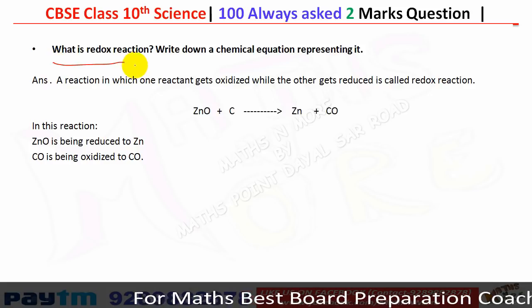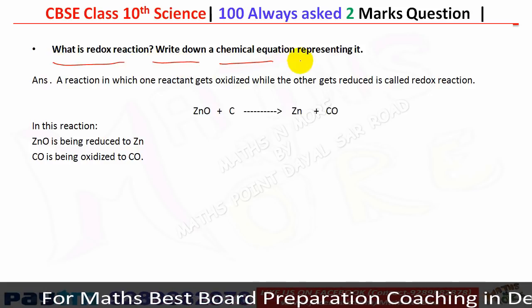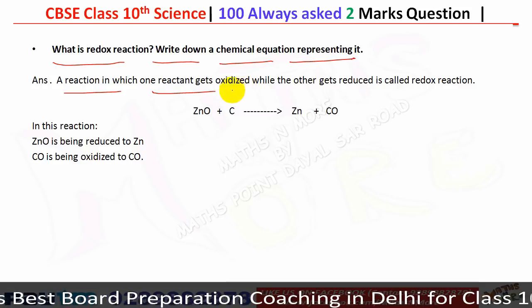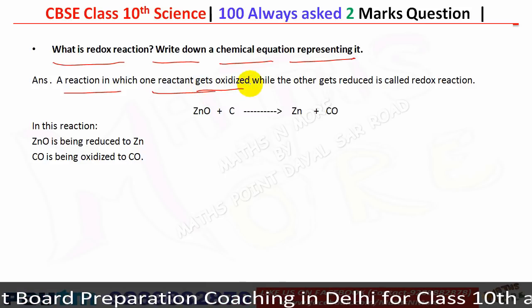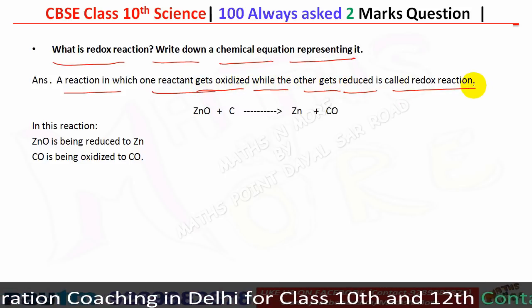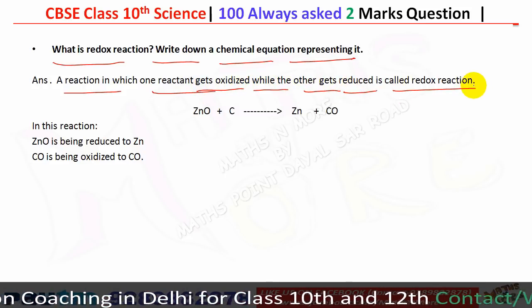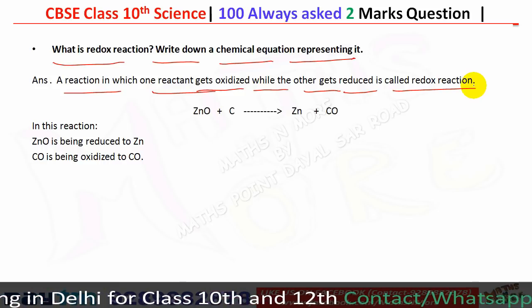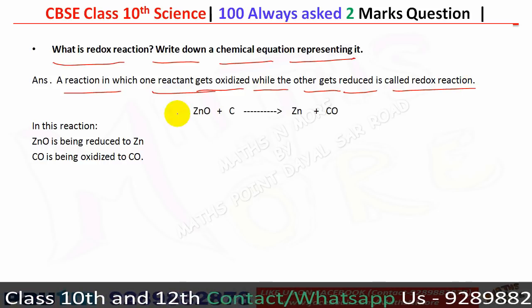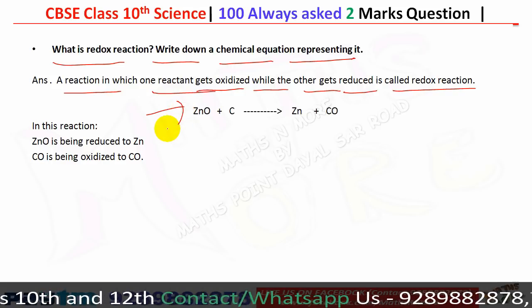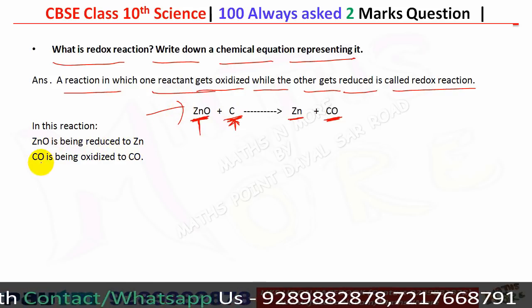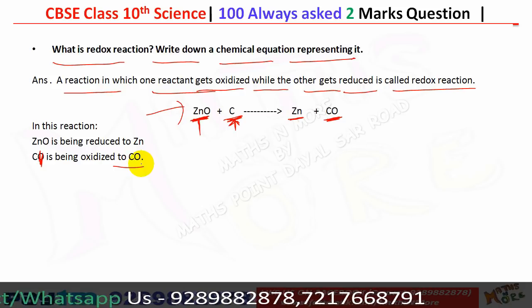A redox reaction is one in which one reactant gets oxidized while the other gets reduced — a reaction in which both oxidation and reduction happen simultaneously. For example: ZnO is reduced to Zn and C is oxidized to CO.